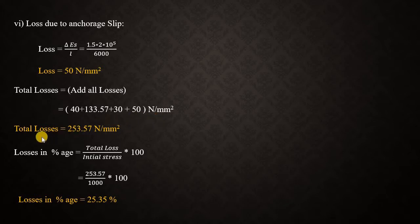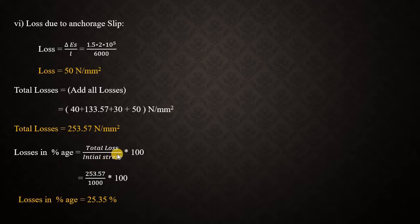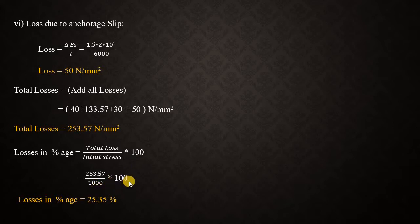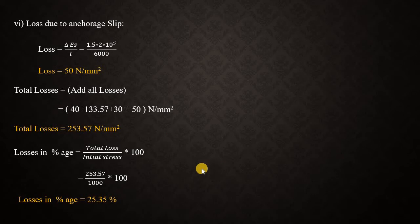Finally, add all the losses together: total loss = 0 + 40 + 133.57 + 30 + 0 + 50 = 253.57 N/mm². To find the loss as a percentage: loss% = (total loss / initial stress) × 100 = (253.57 / 1000) × 100 = 25.35%. This is the total percentage of prestress loss. Hope you have understood — thank you.